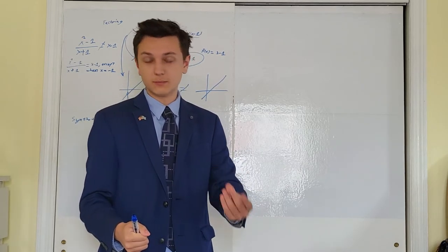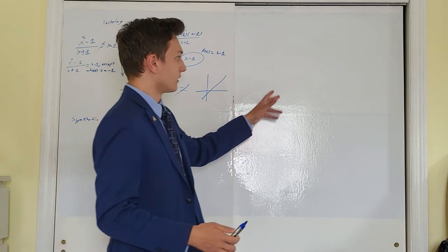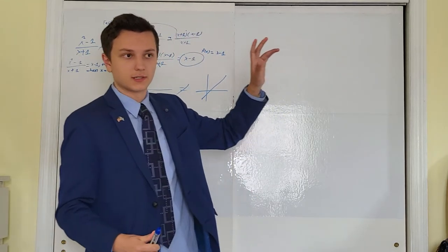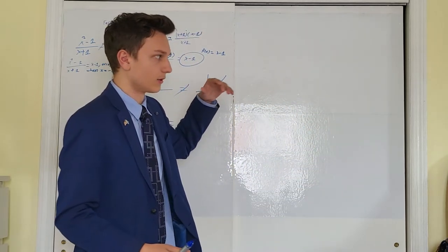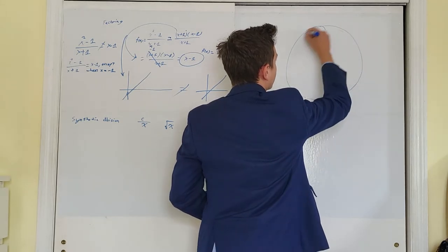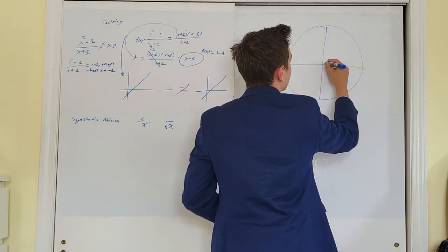The unit circle needs to become something like second nature to you. Because the unit circle helps you with not only just the values of sine, cosine, etc. It helps you with things like your 45, 45, 90 triangles, your 30, 60, 90 triangles.